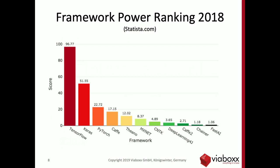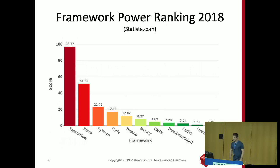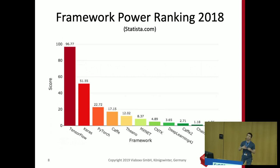Question: the slide says 'power ranking' — what does that mean? Is it the capability or the performance of the frameworks? The answer is: the power is not directly related to the capabilities or performance of the framework, but to its popularity — how many people are using it, how easy it is to find documentation. That's why TensorFlow is really on top.